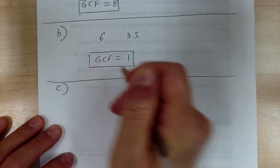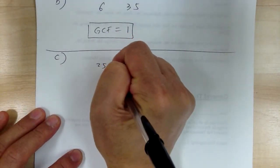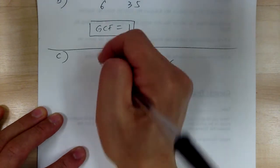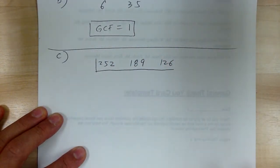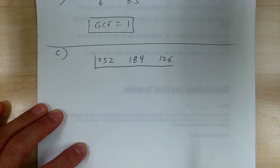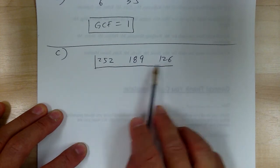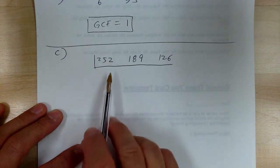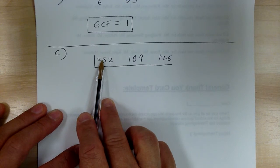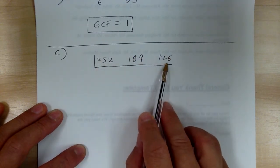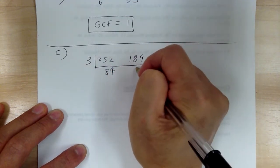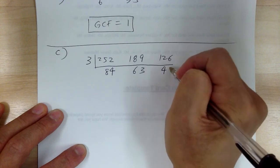Now for part C, you've got three numbers: 252, 189, and 126. It doesn't matter how many numbers you have — you can do them all together. Start with the lowest prime number, 2. 252 and 126 can divide by 2, but 189 cannot. So 2 is no good. Go to the next prime number, 3. Remember, to test for 3 you add all the digits together. 252 adds to 9 — divisible by 3. 189 adds to 18 — divisible by 3. 126 adds to 9 — divisible by 3. So divide all by 3: you get 84, 63, and 42.